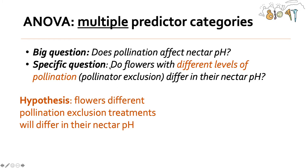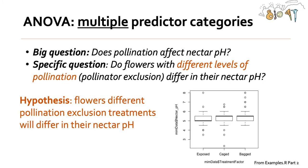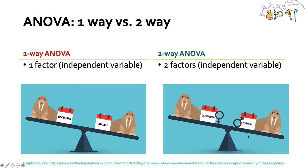You use ANOVA, or analysis of variance, when you have more than two predictor categories. If our big question is does pollination affect nectar pH, we could ask: do flowers with different levels of pollination through our three pollinator exclusion treatments differ in their nectar pH? Our hypothesis would be that flowers with different pollination exclusion treatments — exposed, bagged, or caged — will differ in their nectar pH, and that's what we looked at in our one-way ANOVA example.